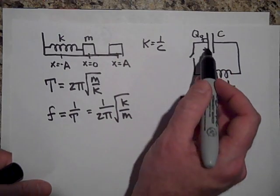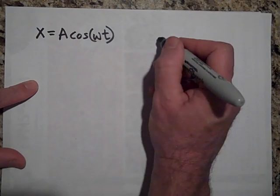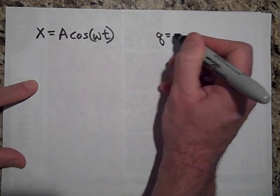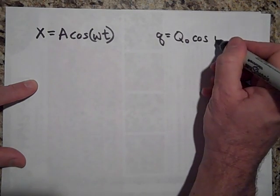And so the Q is analogous to this. So it's going to be Q is equal to Q₀ times the cosine of ωt.